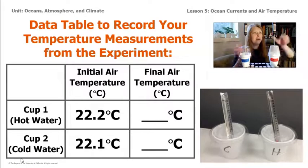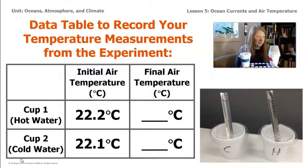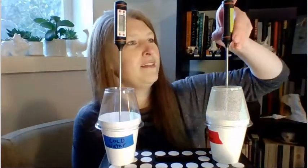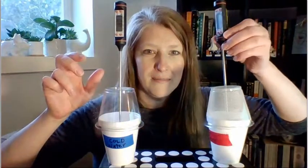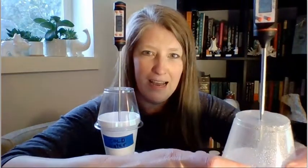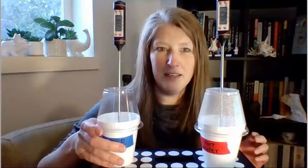Let's take a look at our results. The hot water cup is at 46.6 degrees Celsius — that's a huge increase. And the cold water cup is at 17.9 degrees Celsius. Let's take a moment to record that in our data table. As we can see from the data we've collected, the temperature in both cups changed. In the cup with the hot water added, the air temperature went up quite a few degrees Celsius, and in the cup where the cold water was added, the temperature went down quite a lot as well.